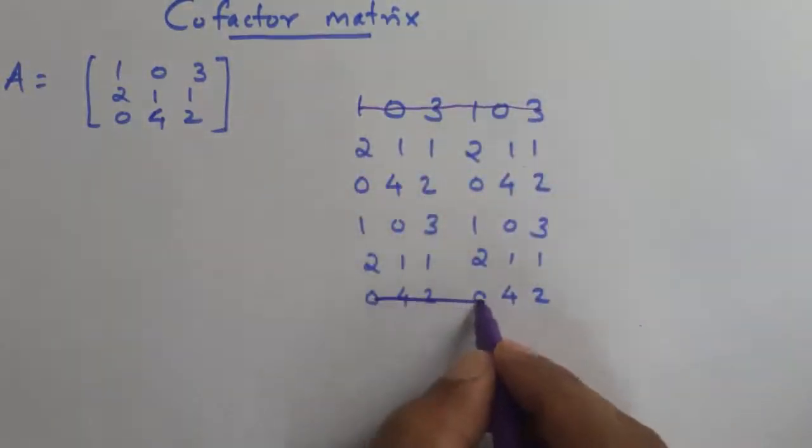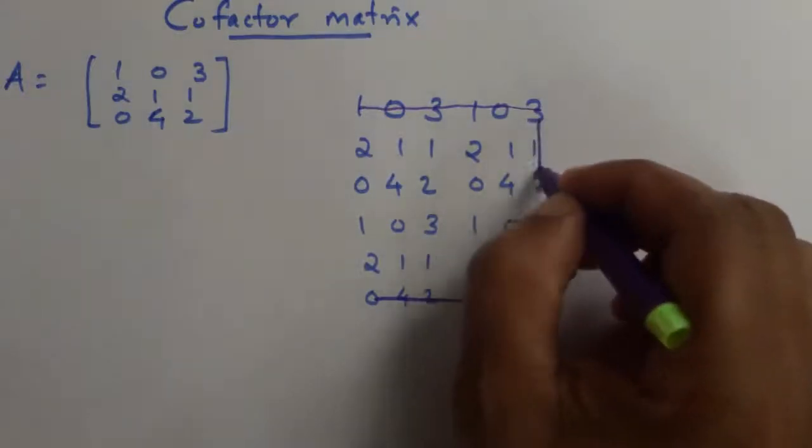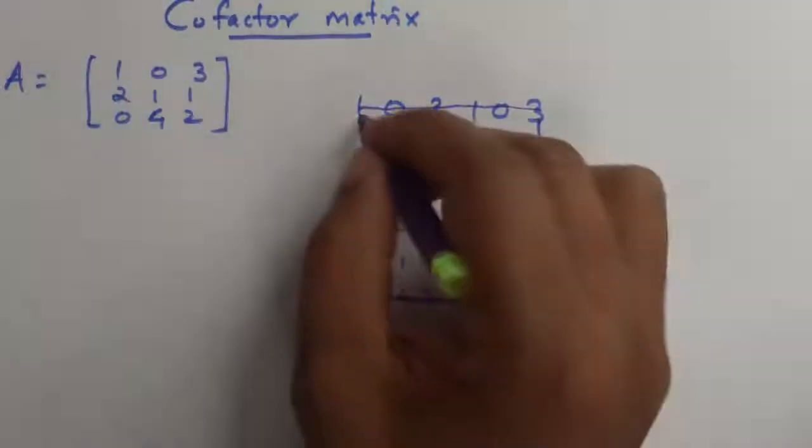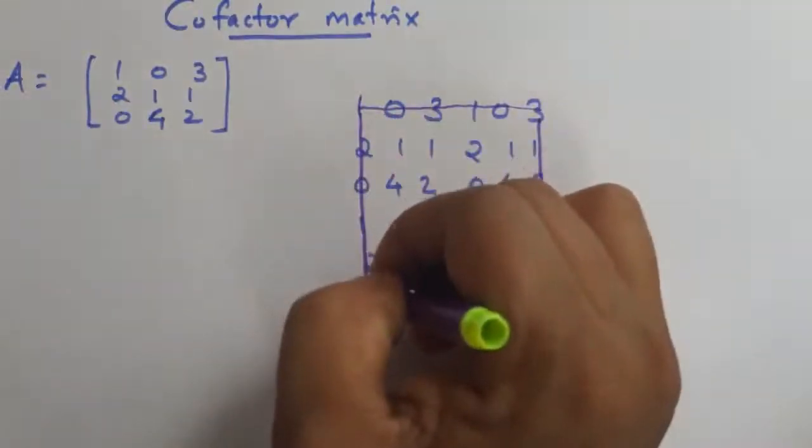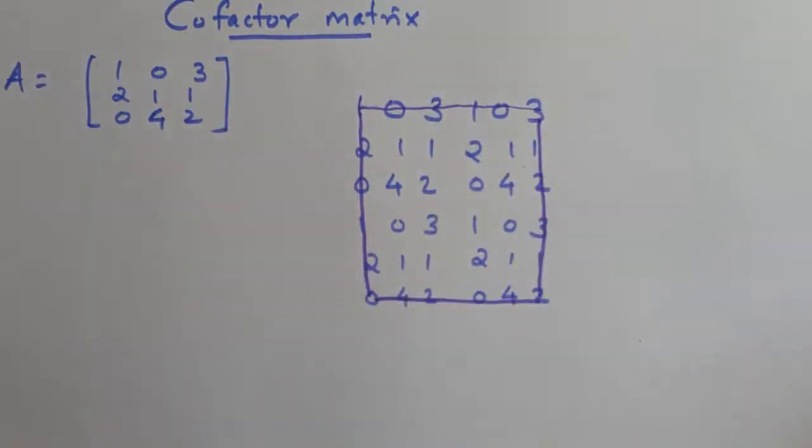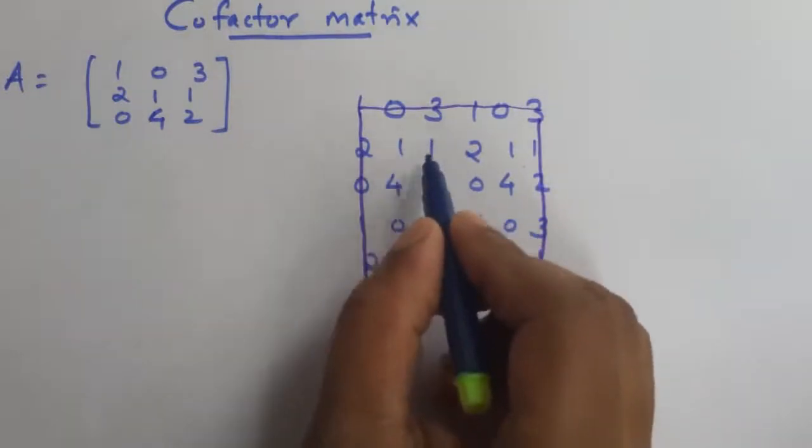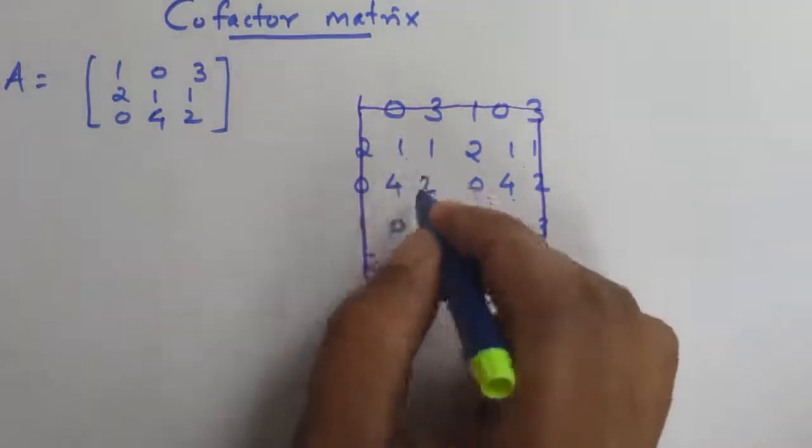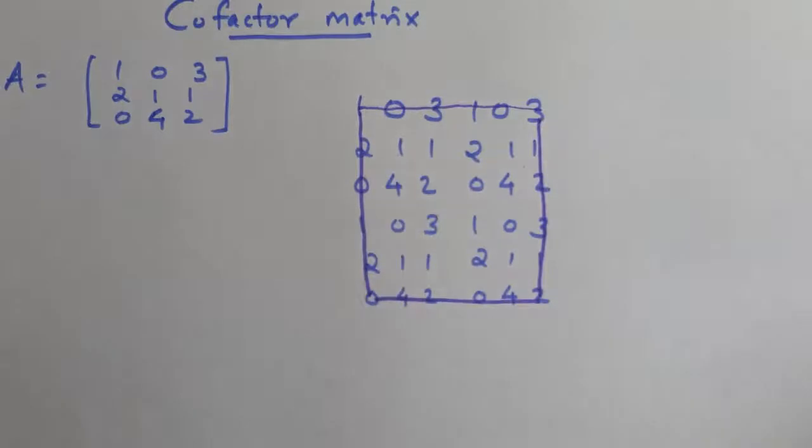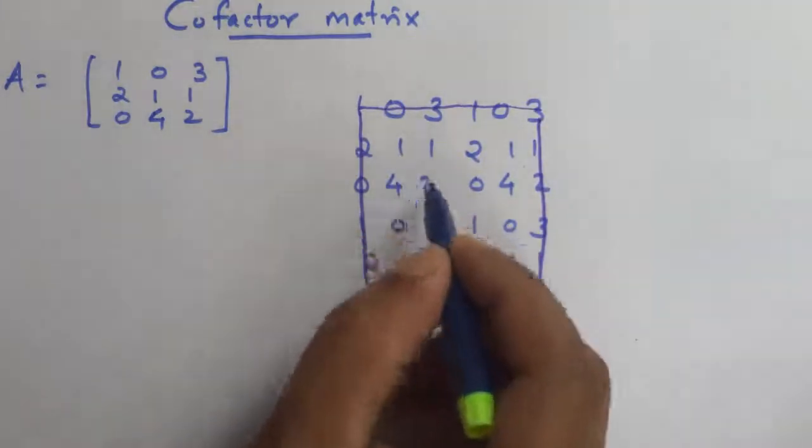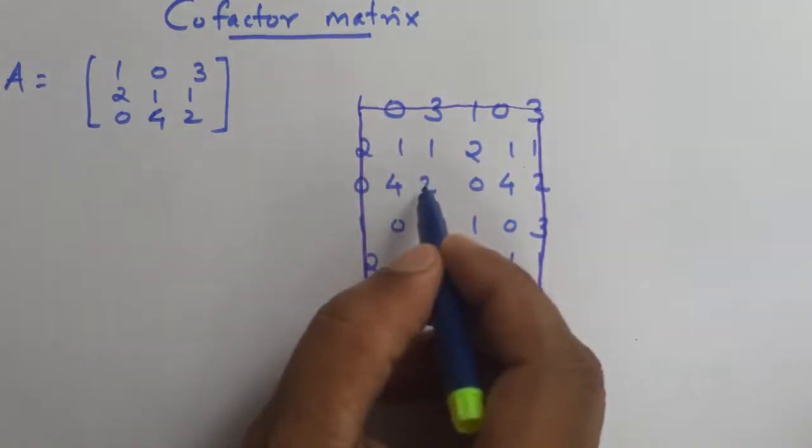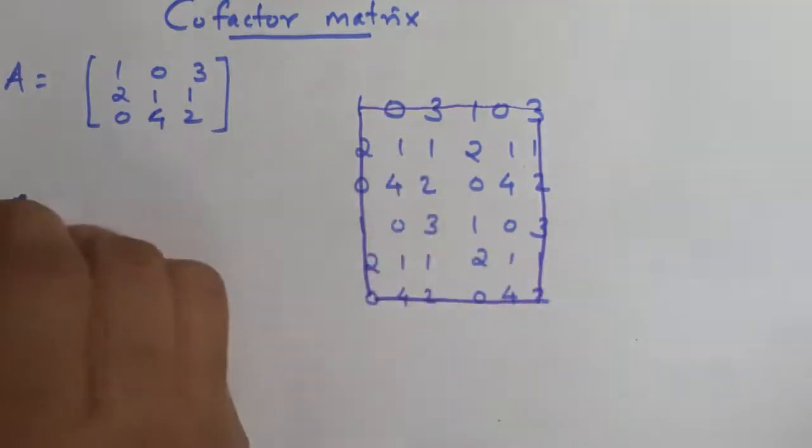This is not important, it is not needed. There's an easy method. 2 by 2 is done. 1 1 4 2, cross multiply then minus.